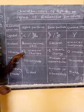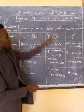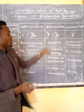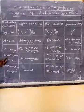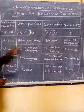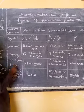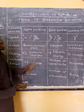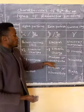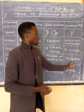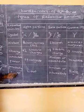Regarding charge: alpha has a charge of positive two, beta has a charge of negative one, and gamma is neutral with a charge of zero. For ionization power: alpha has the strongest ionization power, beta has a medium or intermediate ionization power, and gamma has the weakest ionization power.